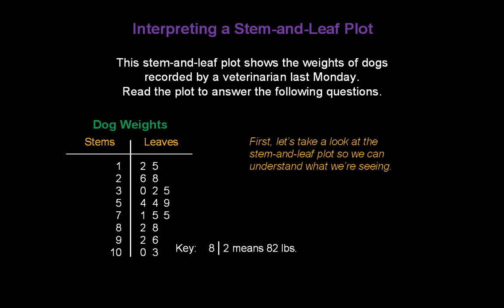But first, let's take a look at the stem-and-leaf plot so we can understand what we're seeing here. The key tells us how to read the data. 8 vertical bar 2 means 82 pounds. So now we know that all the numbers in the table are pounds.